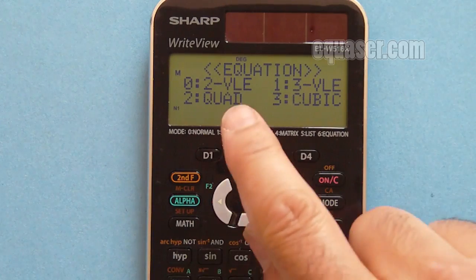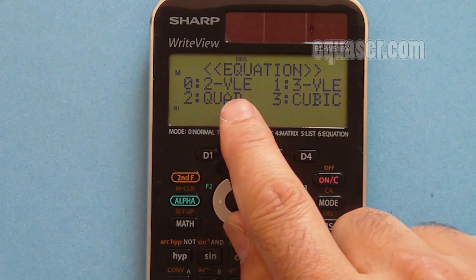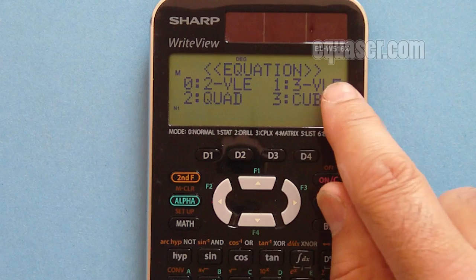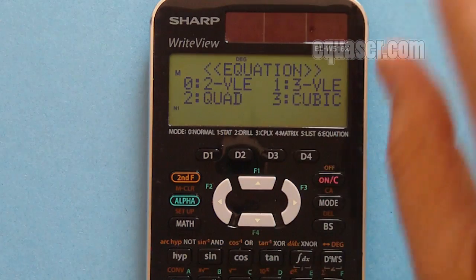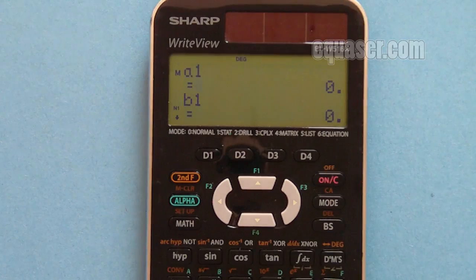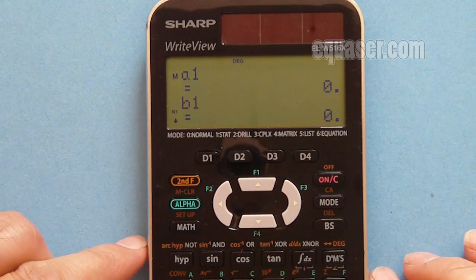On the equation screen we can see 2 VLE and 3 VLE, which refers to two variable or three variable. Because we have two variables, x and y, I press zero.